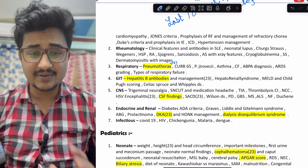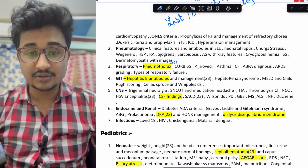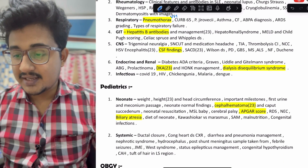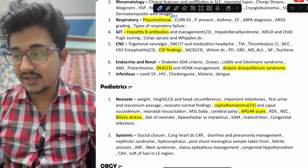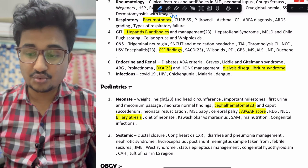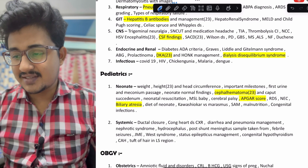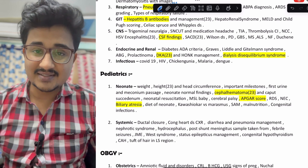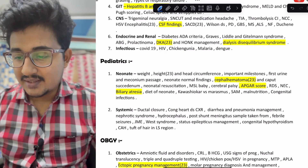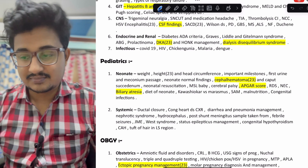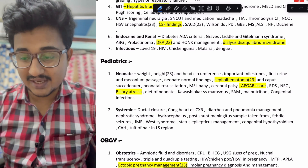DKA is very, very frequently asked nowadays — DKA you should know. In 2023 also it was asked. In pediatrics, biliary atresia and APCA score. Among scoring, the APCA score is the main score you should know for NEET PG as of now. In systemic, the congenital heart chest X-rays that are important you should know. JME, CH, and differential diagnosis of tuft of hair in the lumbosacral region.